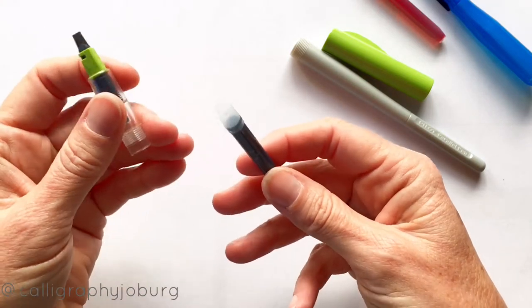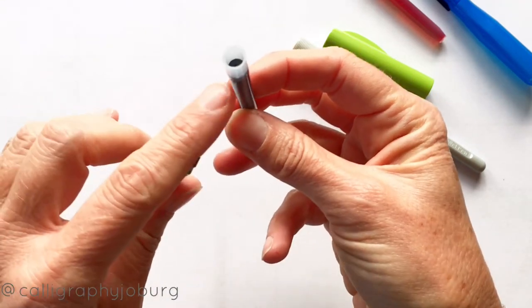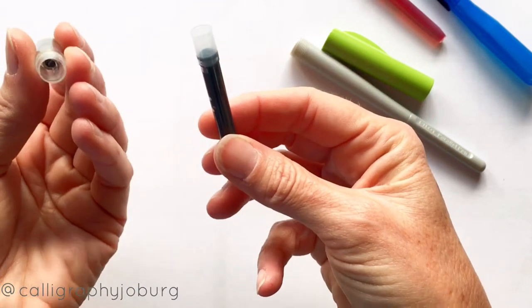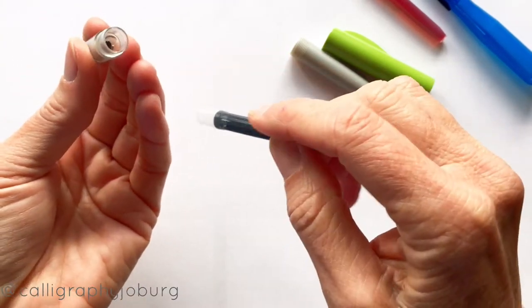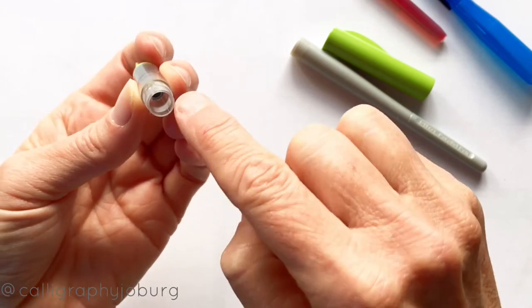With the Pilot Parallel cartridge, there's a little flat disc across the top and what happens is when you insert the cartridge into the pen, there's a sort of a half moon, half crescent piece of plastic.